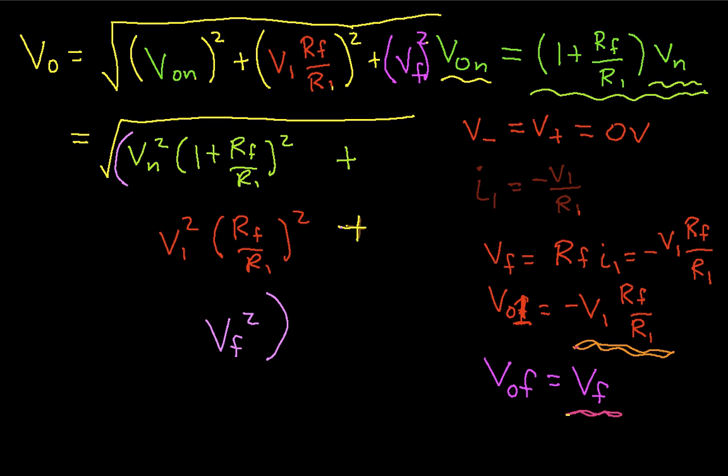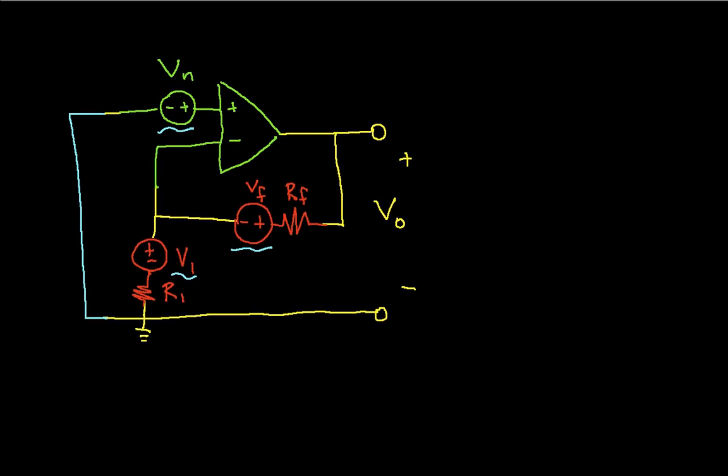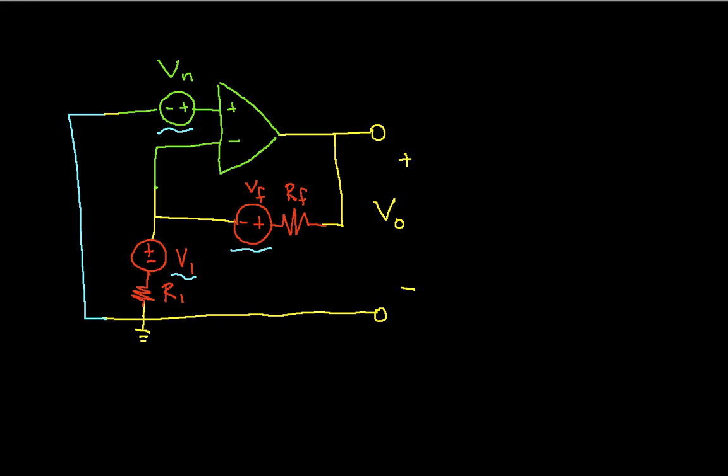So that's pretty much it. And you can go through and work these for several different examples and see the relative weighting under different circumstances for the noise generated by the op amp and the noise generated by R1 and RF. So at that point, we'll pretty much call this finished. What I would like to do is just recap the process to make this hopefully clear in terms of what we've done.